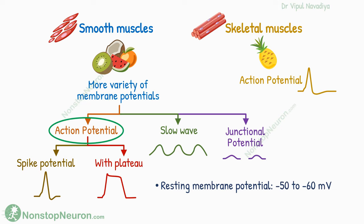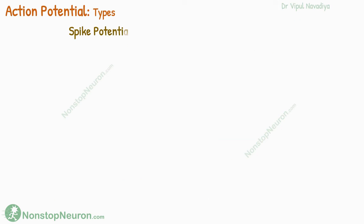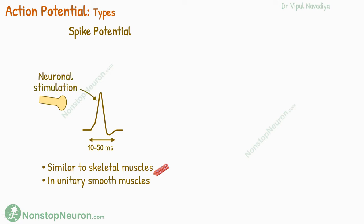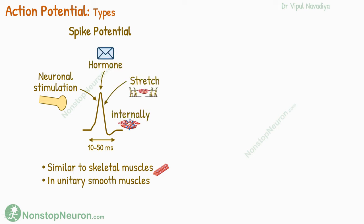First, action potentials. The spike potentials are similar to the action potential that we see in skeletal muscles. They are seen in most unitary smooth muscles. Their duration can be from 10 to 50 milliseconds. They can be elicited by external factors, such as neuronal stimulation, hormones, stretch, or even internally by the muscle itself, as we will see in slow wave potential.